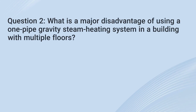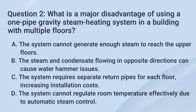Question 2. What is a major disadvantage of using a one-pipe gravity steam heating system in a building with multiple floors? A. The system cannot generate enough steam to reach the upper floors.